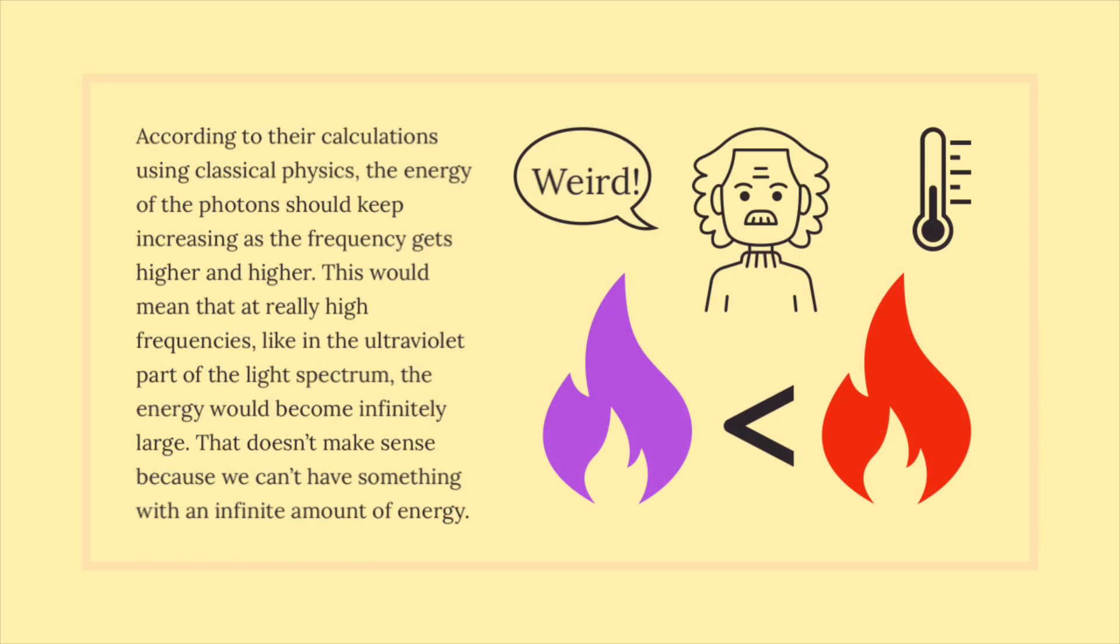According to their calculations using classical physics, the energy of the photons should keep increasing as the frequency gets higher and higher. This would mean that at really high frequencies, like in the ultraviolet part of the light spectrum, the energy would become infinitely large. That doesn't make sense because we can't have something with an infinite amount of energy.